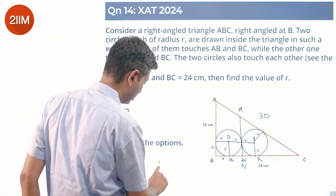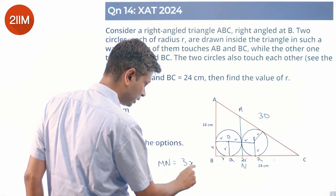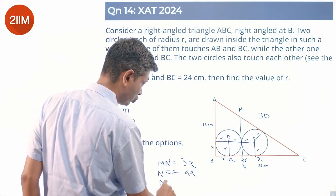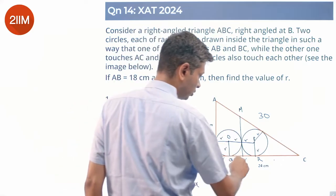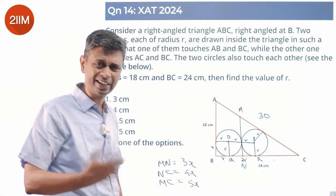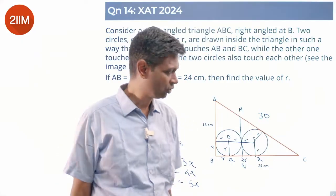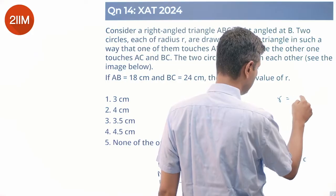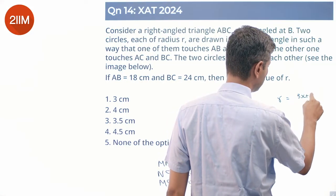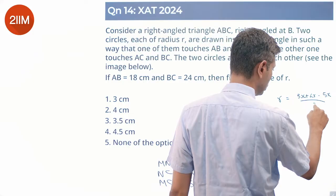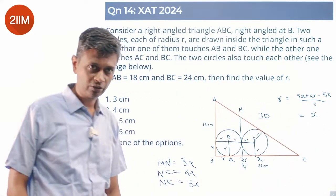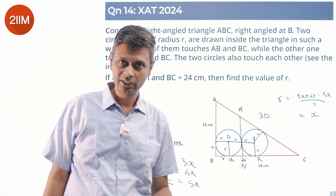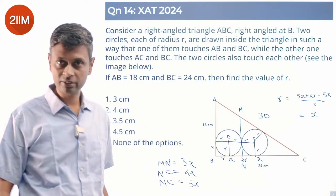I set MN equal to 3x, NC equal to 4x, and MC equal to 5x. These two triangles are similar — this is a right angle, this angle is common. For triangle MNC with sides 3x, 4x, 5x, the incircle radius, which happens to be R, equals (3x + 4x − 5x) / 2 = 2x / 2 = x. So R equals x.